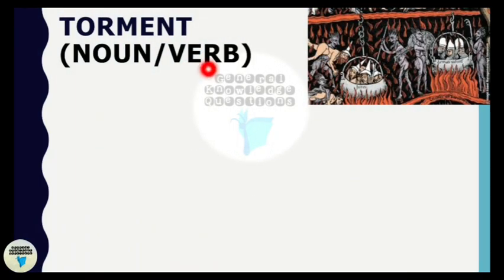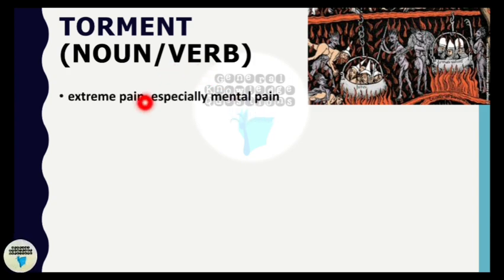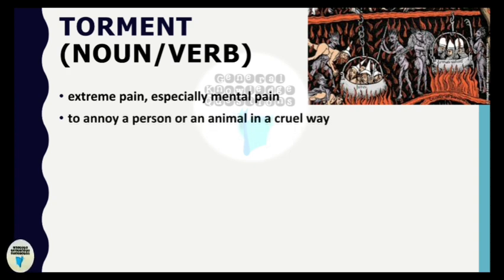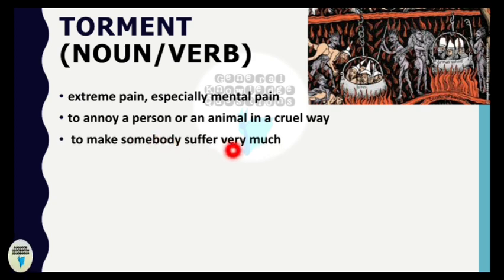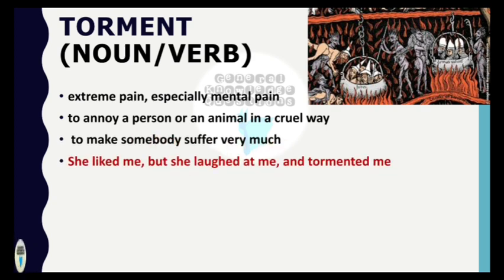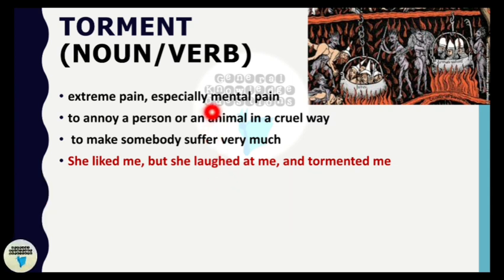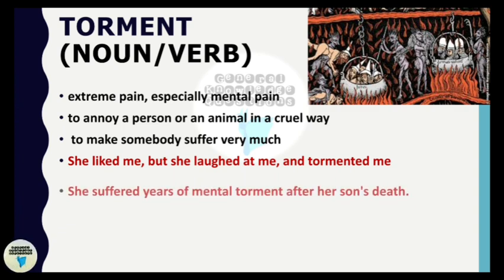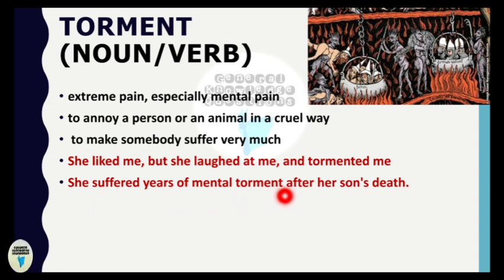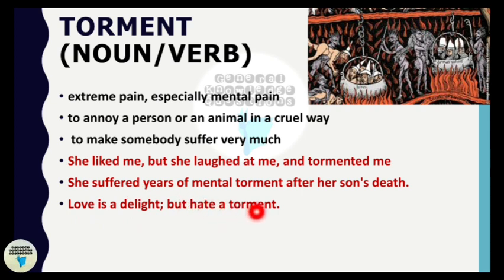The next word is 'torment.' Torment is used as both a noun and a verb. It means extreme pain, especially mental pain. It also means to annoy a person or an animal in a cruel way, or to make somebody suffer very much. For example: 'She liked me but she laughed at me and tormented me' — that way of laughing gave that person mental pain. Another example: 'She suffered years of mental torment after her son's death,' or 'Love is a delight but hate is a torment.'